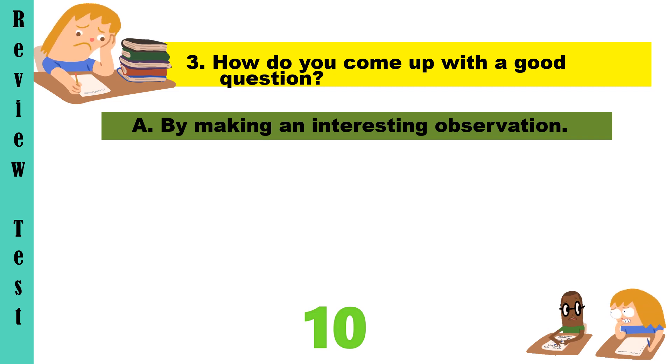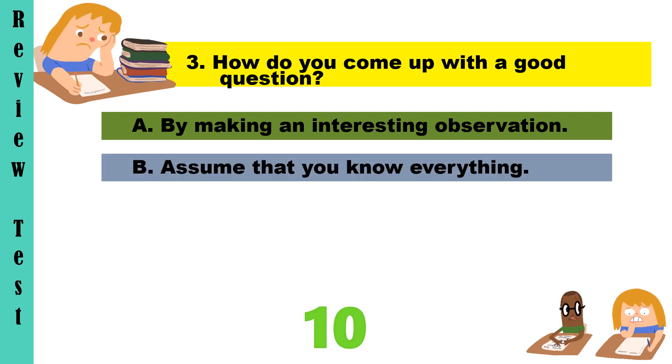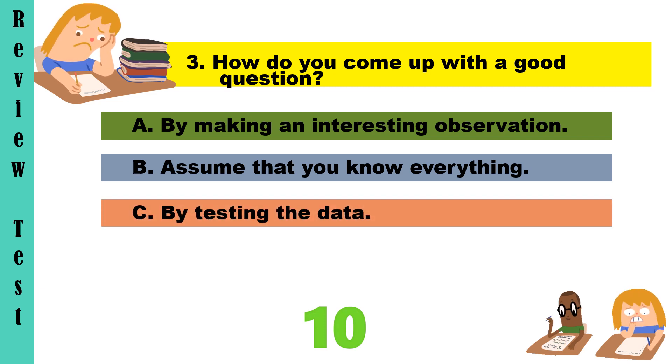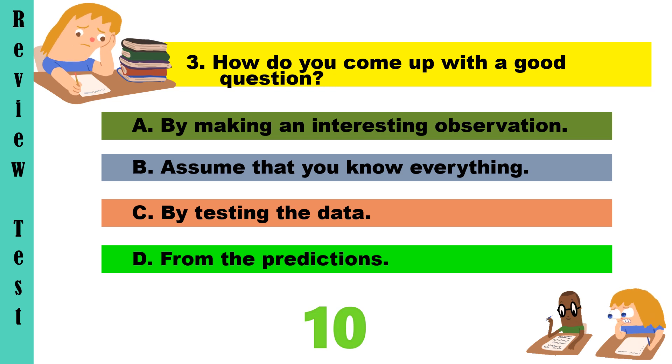Question 3. How do you come up with a good question? A. By making an interesting observation. B. Assume that you know everything. C. By testing the data. Or D. From the predictions.